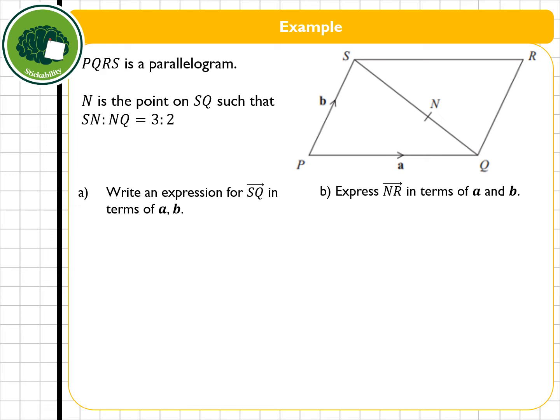Part A, like we said, is always going to be a bit easier. I'm going to work out the expression from S to Q in terms of A and B. The direct route is obviously this route here. I don't have any information about that. So the route I'm going to take is to go from S to P and then P to Q. I'm going backwards along that vector P to S, which means I need to have minus B plus A.